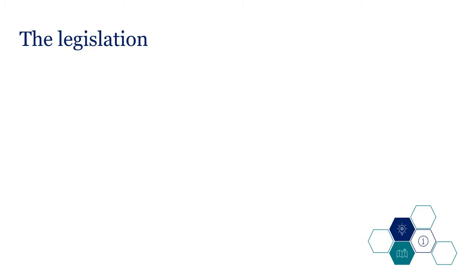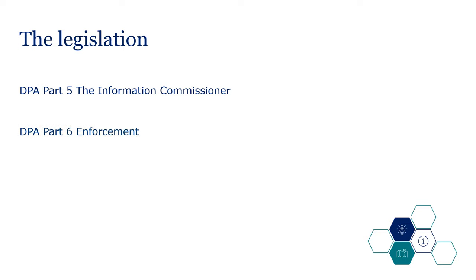Because this module covers the specific roles and powers of the UK Information Commissioner, we will be mostly referring to the DPA. Part 5 covers the Information Commissioner and Part 6 covers enforcement powers. There is also information about the Office of the Commissioner in DPA Schedule 12 and a list of general functions in Schedule 13.